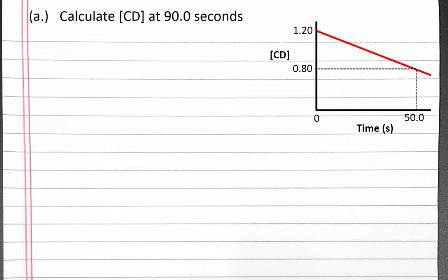First we'll calculate our concentration of CD at 90 seconds. Since the concentration of CD plotted versus time is a straight line, this is a zero-order reaction with respect to CD, which means the reaction rate does not depend on the concentration of CD.